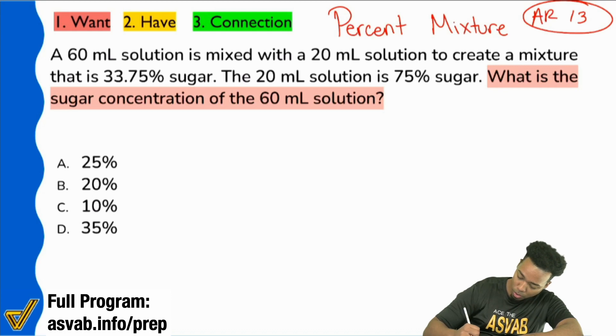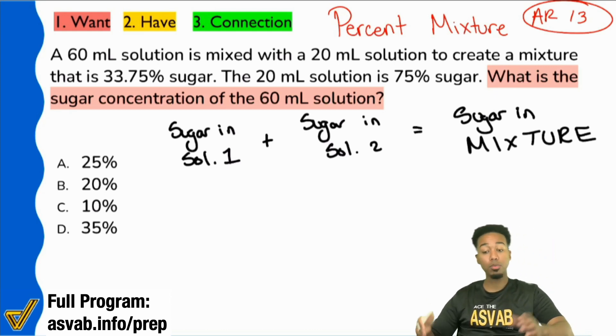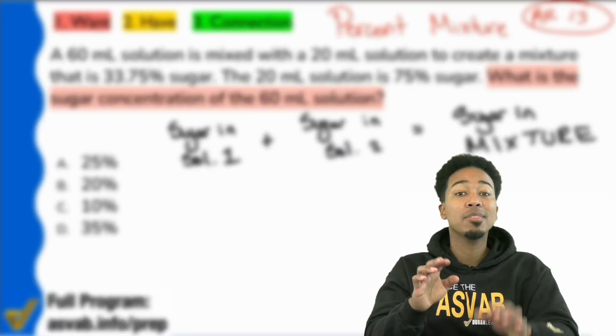So we're going to be saying sugar in solution one plus the sugar in solution two is going to equal the sugar in mixture. Everybody, is that true? Is that still going to be true? And before we continue,